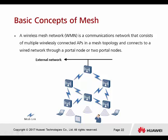To prevent single-link failure, the mesh networking solution was introduced. A wireless mesh network (WMN) is a communication network consisting of multiple wirelessly connected APs in a mesh topology, connected to the wired network through a portal node or two portal nodes. All APs have many redundant link connections, so if one link or AP becomes unstable due to interference, traffic can still use another path to reach the root — providing a redundant design.